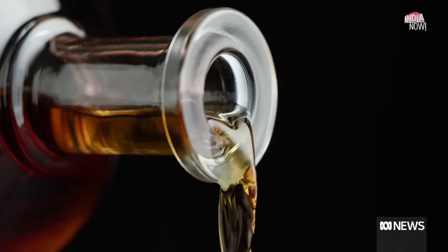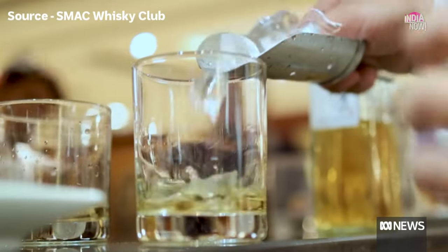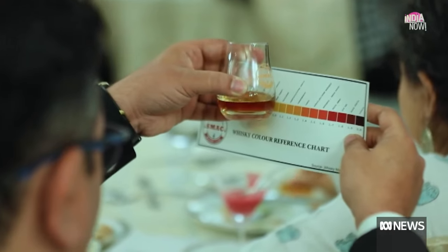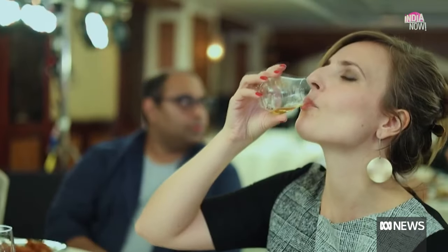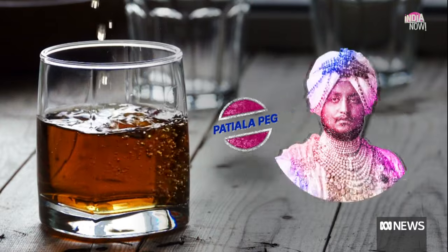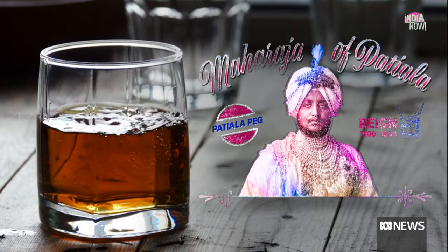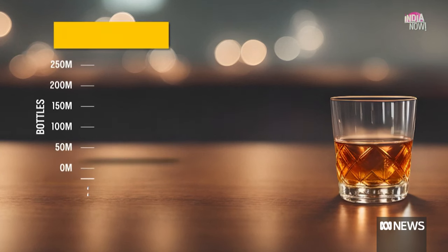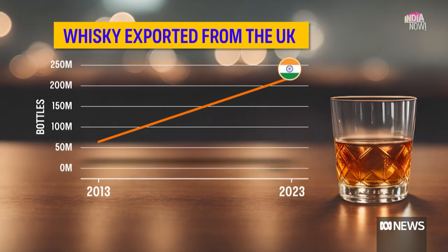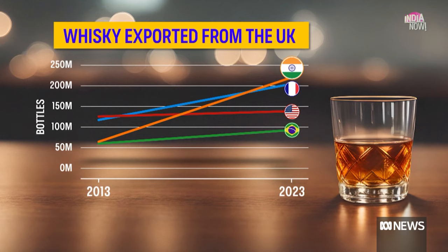India has now overtaken France as the biggest buyer of Scotch whisky — so what is driving this love affair? The subcontinent has long loved the tipple. Indian whisky drinkers often enjoy the fabled Patiala Peg, named after the larger-than-life Maharaja of Patiala — that's two fingers, around four standard measures, which is 120 millilitres. India's whisky consumption has exploded by 200% over the last decade, overtaking France as the world's second biggest market for Scotch by volume.